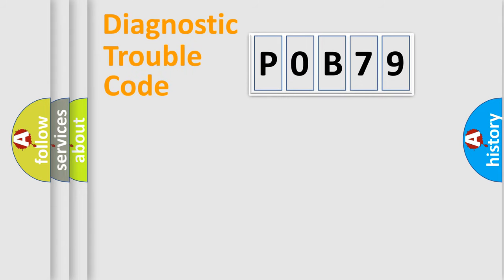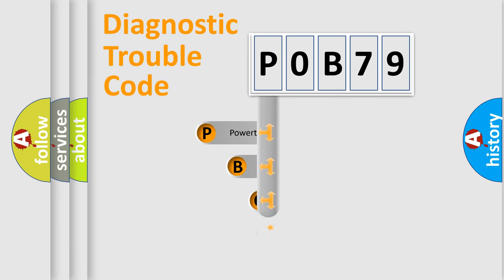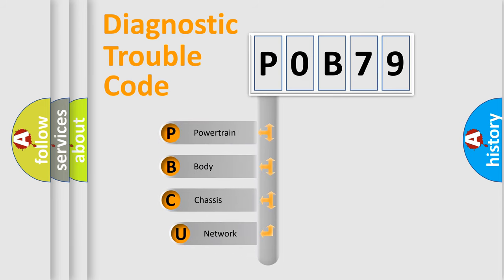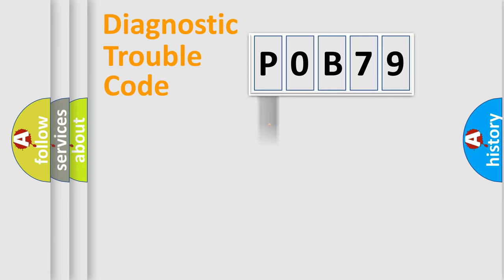First, let's look at the history of diagnostic fault code composition according to the OBD2 protocol, which is unified for all automakers since 2000. We divide the electric system of an automobile into four basic units: Powertrain, Body, Chassis, and Network. This distribution is defined in the first character of the code.